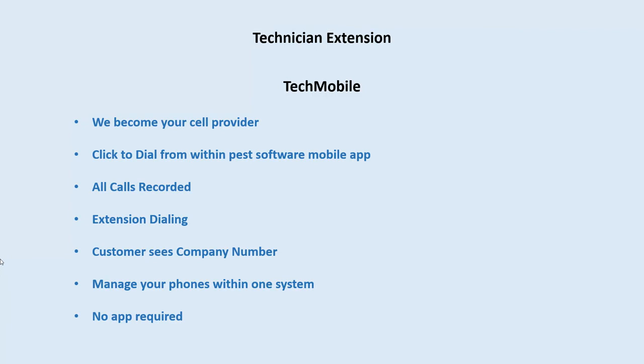With Tech Mobile connected to the extension, all calls are recorded, it's extension dialing, and we can mask the caller ID. The biggest advantage over the mobile app is that with the mobile app employees must be logged in to use it, and you have to run reports to verify they're doing it. With Tech Mobile there's no choice — that is the phone and there's no way around it. It's not an app they can log out of.